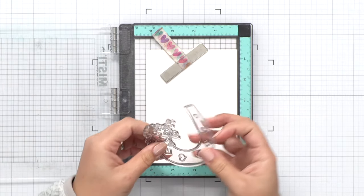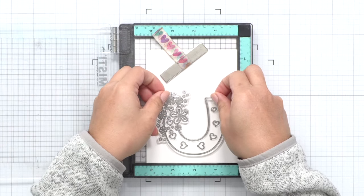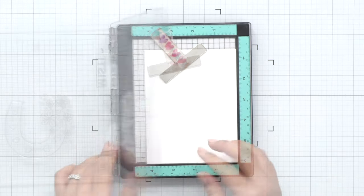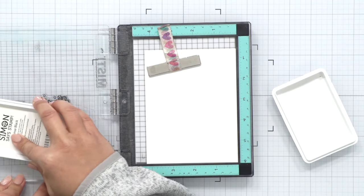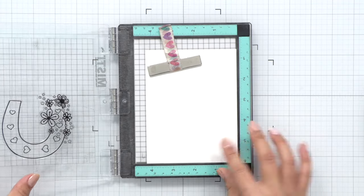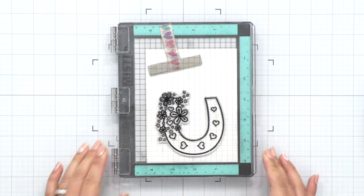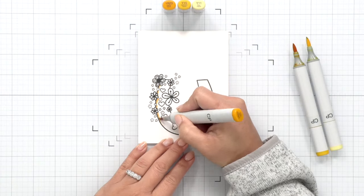I really love the size of this image because it really becomes the focal point on your card. So I'm going to stamp this with a black hybrid ink so that I can color with Copic markers and it's really going to be a quick color because there's really not a whole lot to this.